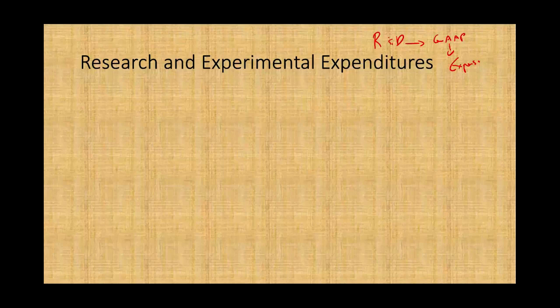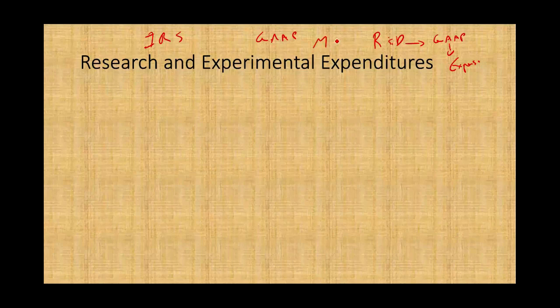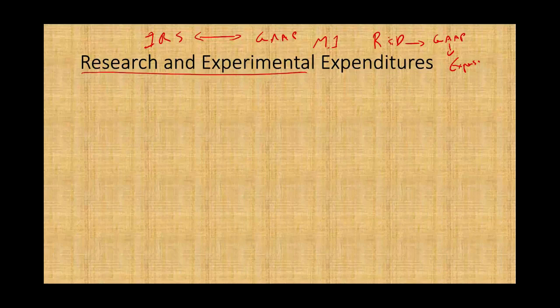There are two reasons I want to go over this topic. One, you have to know how we treat research and experimental expenditure, especially if you are working with a pharmaceutical company. The second reason is it's a learning process about comparing IRS to GAAP. At some point in your career, you're going to have to deal with deferred income taxes, deferred tax liability, and prepare a schedule called M1. When you reconcile between IRS and GAAP, you want to know the differences between them, and research and experimental expenditure is a good topic to illustrate that.